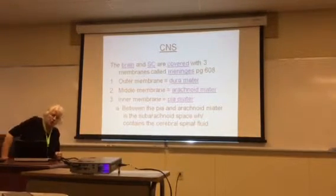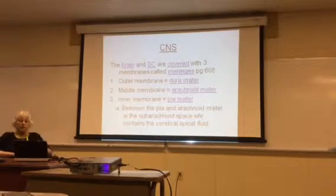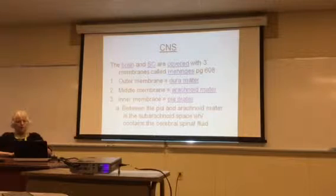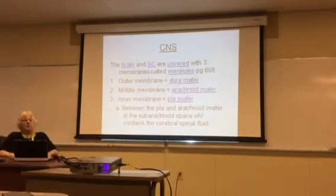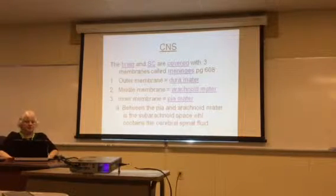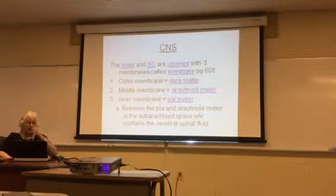This is a picture showing you the brain and the spinal cord. The central nervous system, which is the brain and the spinal cord, is covered with three membranes called meninges. There's an outer membrane, a middle membrane, and an inner membrane. The outer one is called the dura mater, the middle one is the arachnoid mater, and the inner one is the pia mater.